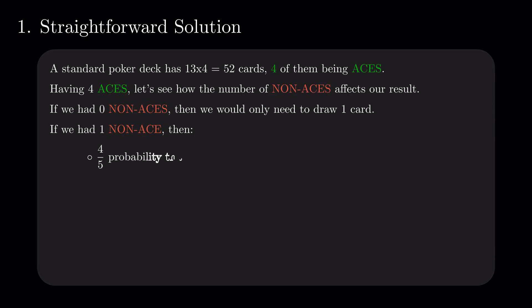With a probability of 4 divided by 5, we draw an ace. And with a probability of 1 divided by 5, we draw the one card that's not an ace. But then, as expected, we have to draw an ace afterwards.